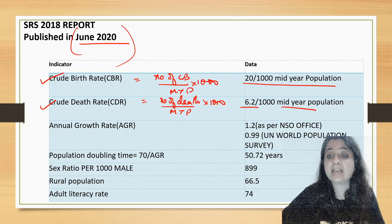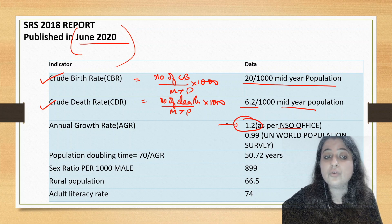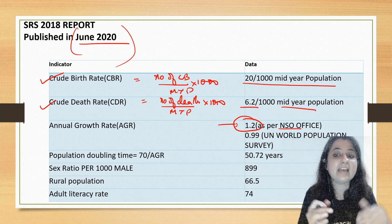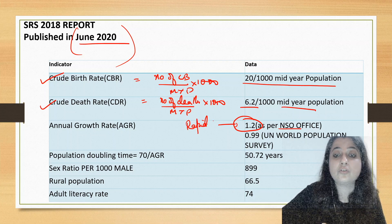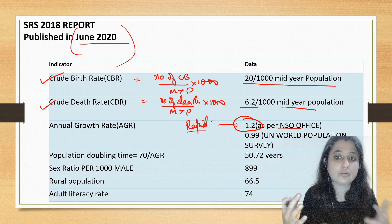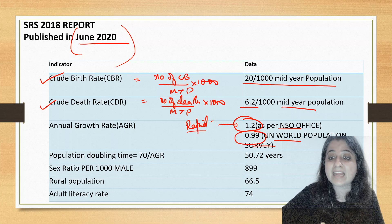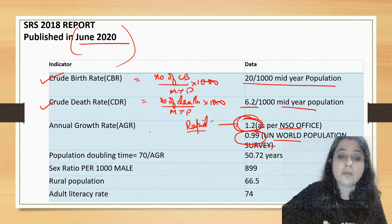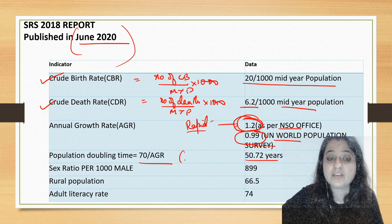The annual growth rate of our country, as per the National Statistical Office, is currently 1.2. Annual growth rate is calculated as CBR minus CDR divided by 10. Currently India is in the rapid growth phase. According to the UN World Population Survey it is 0.99, but we should go with 1.2 for exam purposes.